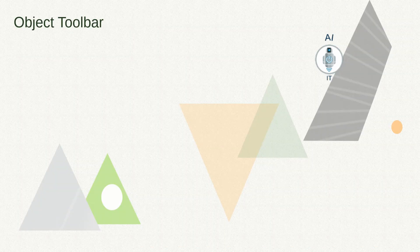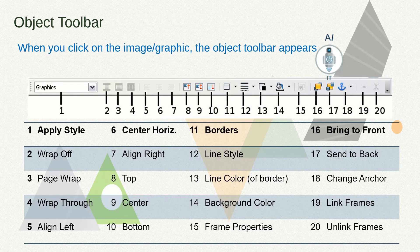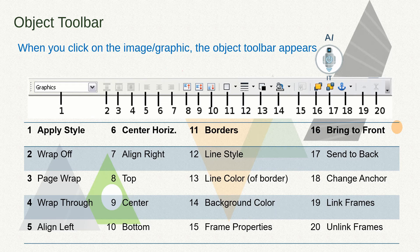When we insert an image or a graphic in OpenOffice Writer, the object toolbar appears with different options. The first is apply style, second is wrap off, third is page wrap, fourth is wrap through, fifth is align left, sixth is align center, seventh is align right, eighth is wrap, ninth is center, and tenth is bottom.